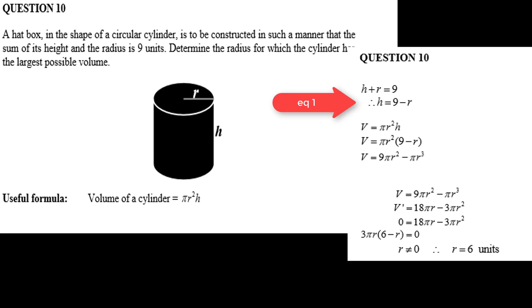Now substitute equation 1 into the equation for the volume and we get v equals pi r squared times h or v equals pi r squared times 9 minus r or v equals 9 pi r squared minus pi r cubed.